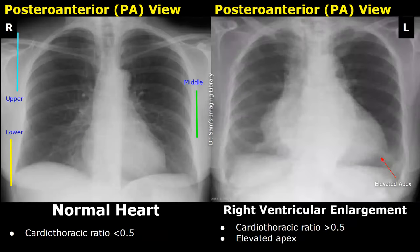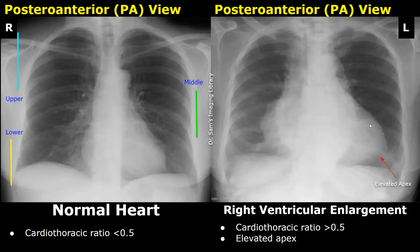Now we have a case of right ventricular enlargement. In normal cases the cardiothoracic ratio is less than 0.5. In cases of significant right ventricular enlargement the cardiothoracic ratio will be greater than 0.5. Another feature is that the apex will be elevated, whereas in the normal image the apex seems to be resting over the diaphragm. This elevation of the apex can be a sign of right ventricular enlargement.